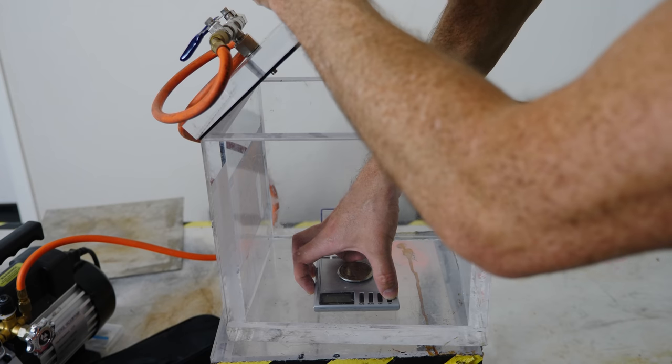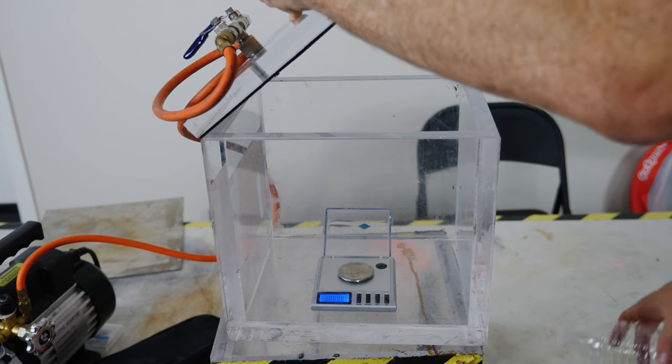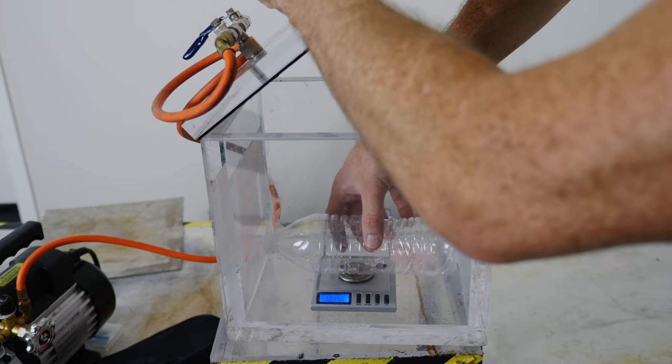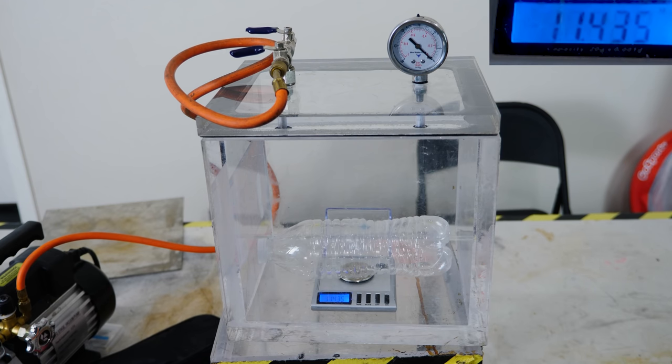I'm going to put this empty bottle on a scale in the vacuum chamber and you'll see that when I remove the air from around it, it suddenly starts to get heavier. Okay, let's put our empty bottle on here. So right now it weighs 11.434 grams.